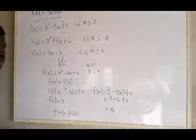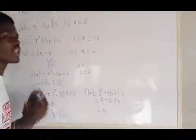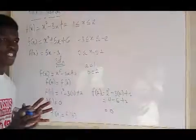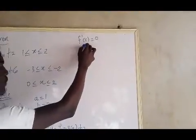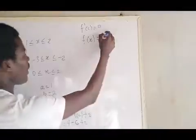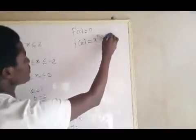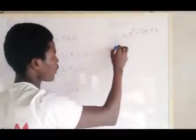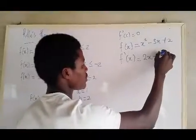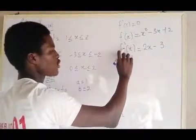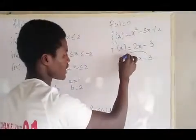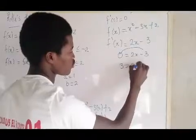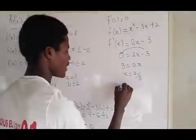Since they satisfy the conditions of Rolle's Theorem, we now check for the point by setting f′(c) = 0. Our function is f(x) = x² − 3x + 2, so f′(x) = 2x − 3. Setting f′(x) = 0 gives 2x − 3 = 0.